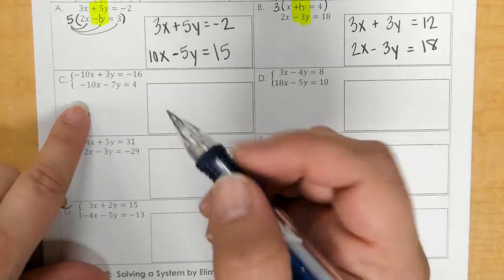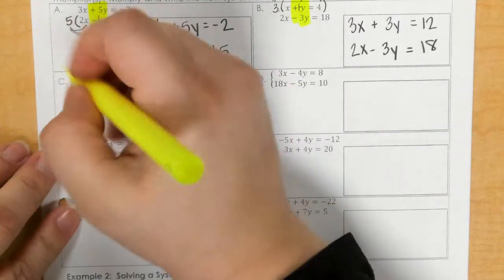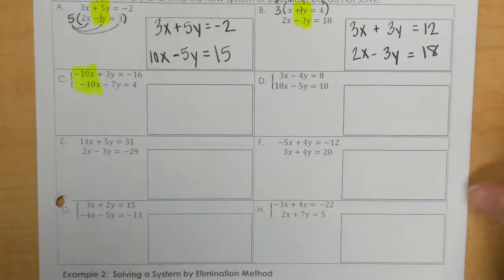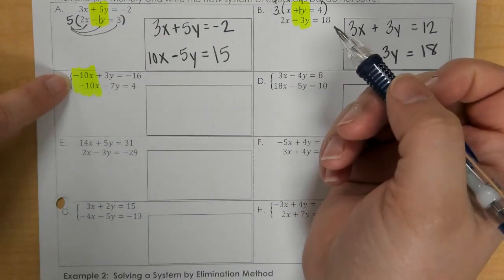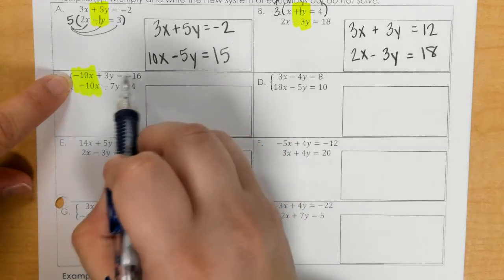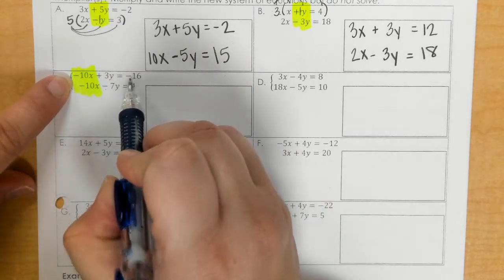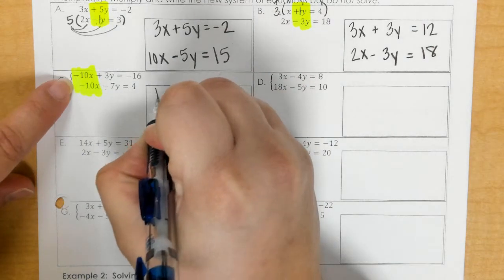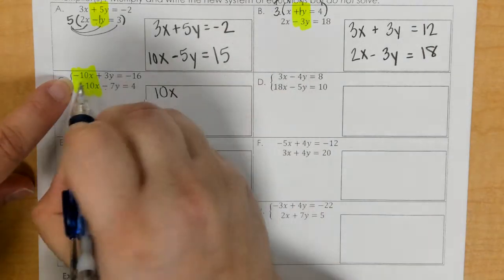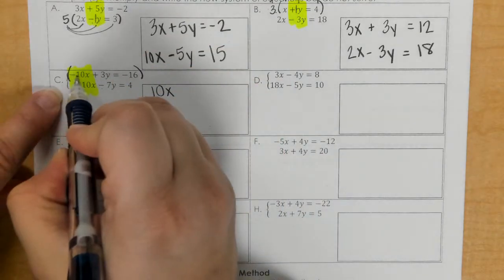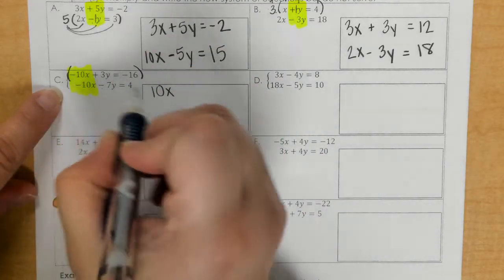And I would say the 10 is the best. So I'm actually going to go with the top one because if I multiply by a negative, I'm going to make a positive up there. So I want to make this first number a positive 10x. So what would I multiply negative 10 by to get positive 10?